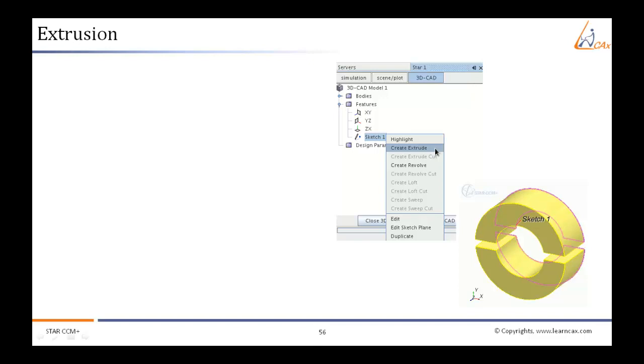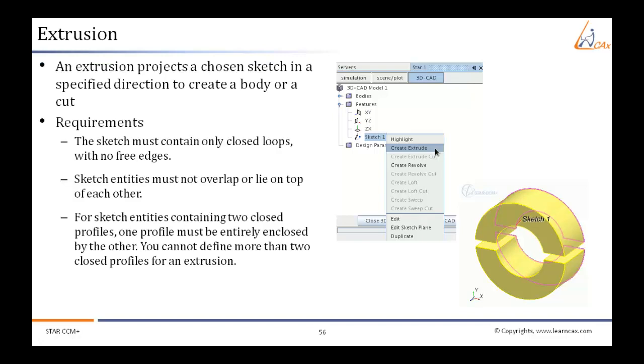First, let us take the extrusion feature. This is a projection operation which creates a solid body from a 2D sketch. The feature can be used to create either an extruded body or an extrusion cut. There are a few requirements of this operation.